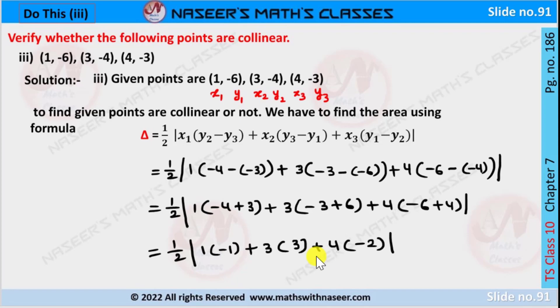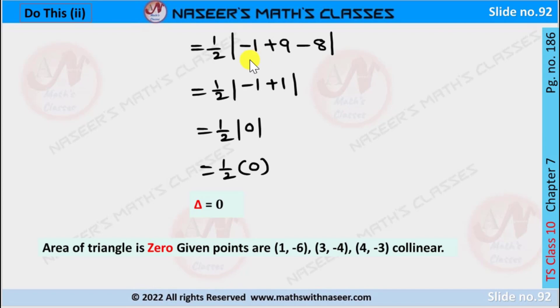After simplifying, it is written as 1/2 mod [minus 1 plus 9 minus 8]. Here 9 minus 8 is 1, then we write it as 1.